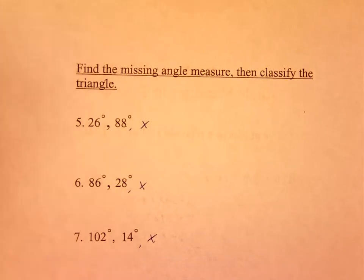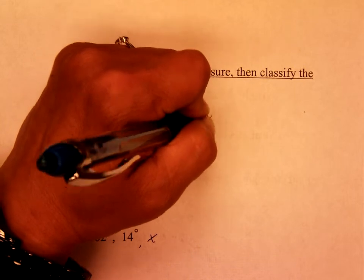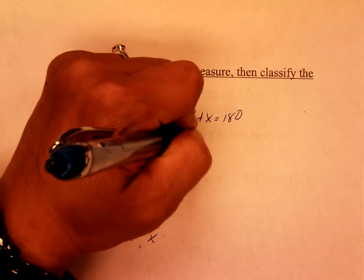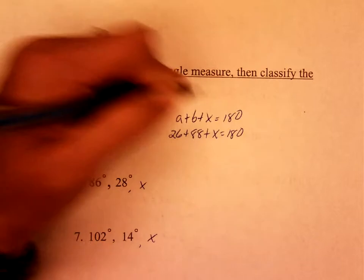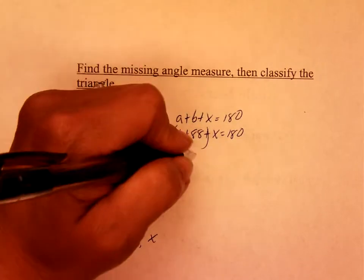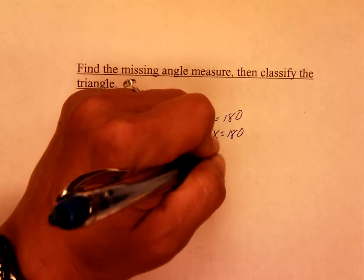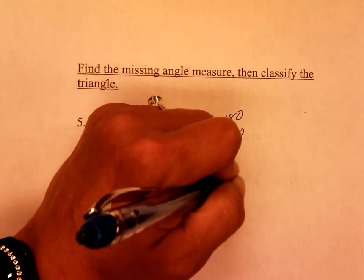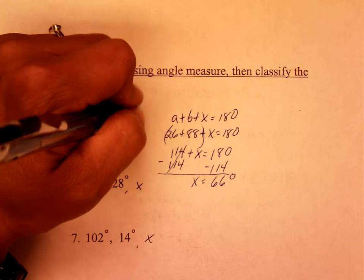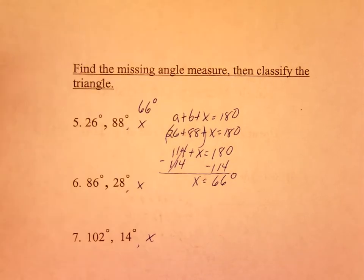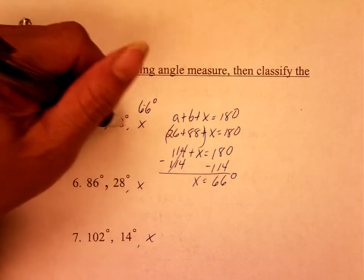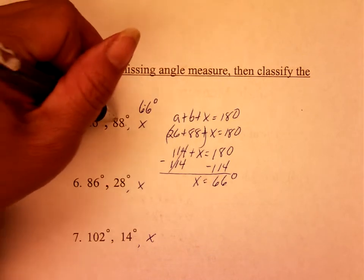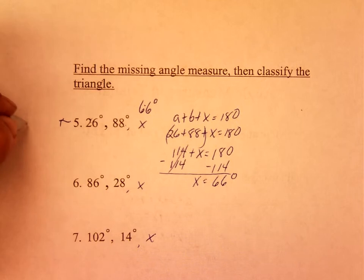Number 5: a plus b plus x is equal to 180. Replace a and b with 26 plus 88 plus x is equal to 180. Add up your 26 and 88 and you get 114 plus x is equal to 180. Subtract 114 on both sides, and x is equal to 66 degrees. Now when we're talking about classifying, look at these degrees — you have to classify by acute, obtuse, or right. 26 is less than 90, 88 is less than 90, and 66 is less than 90, so number 5 is an acute triangle.